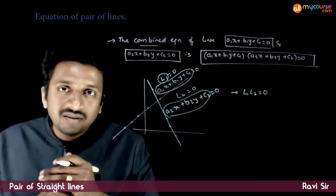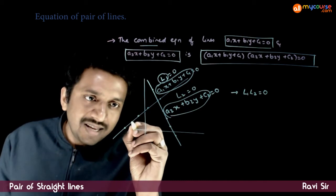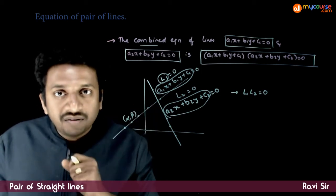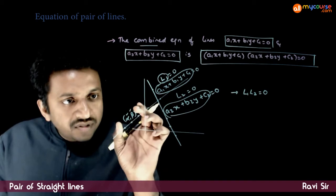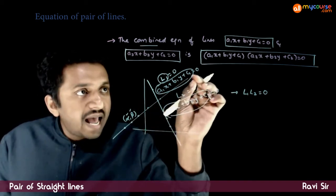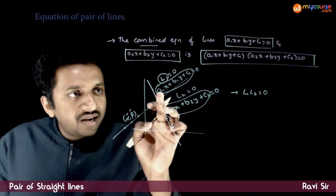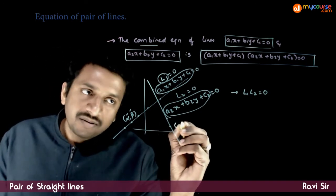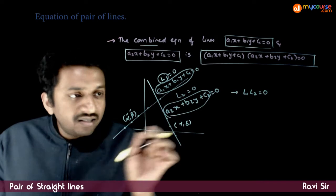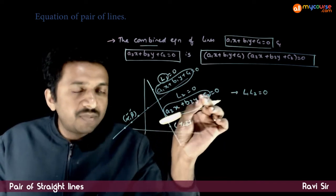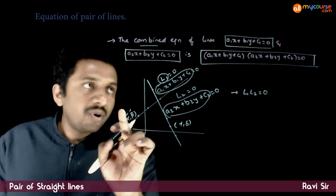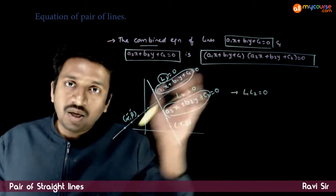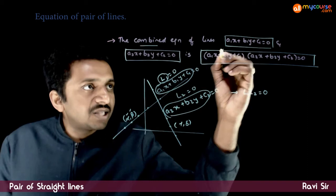Why is this the combined equation? Because if you take any point (α, β) on the first line and substitute (α, β) into this expression, it has to satisfy this equation. So, a1·α + b1·β + c1 will be equal to 0. If you take any point (γ, δ) on the second line, (γ, δ) satisfies the second expression equal to 0. Now if you take any point on the first line and substitute in this equation, this point makes the first expression equal to 0.